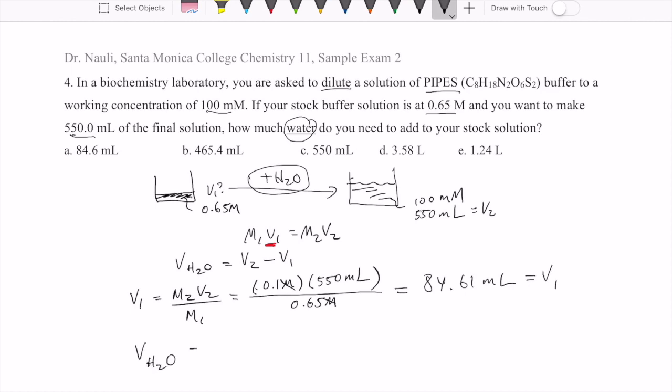And then to get the water, remember what we're going to do is V2, which is 550 minus V1, which is 84.61 milliliters. And that should give us 465.4 milliliters. And so that answer is B.